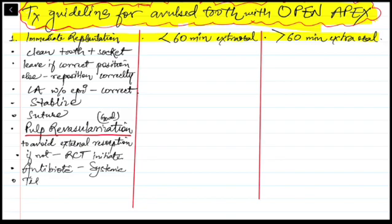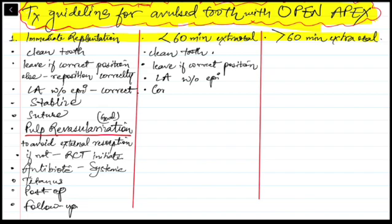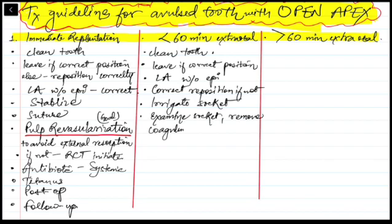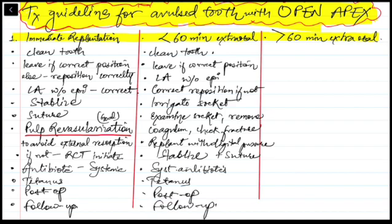Administer systemic antibiotics, check tetanus status, provide post-op instructions, and follow up. For extra-oral time less than 60 minutes with open apex: check and rinse the avulsed tooth, place it in storage medium while taking patient history, administer local anesthetic without vasoconstrictor, irrigate the socket with saline, examine the socket — no coagulum, no fractures. Reimplant slowly with slight digital pressure, verify position clinically and radiographically, stabilize, suture, perform revascularization, administer systemic antibiotics, check tetanus, provide post-op instructions, and follow up.